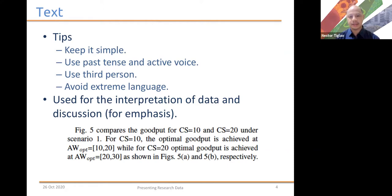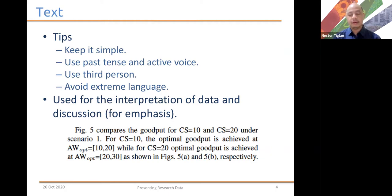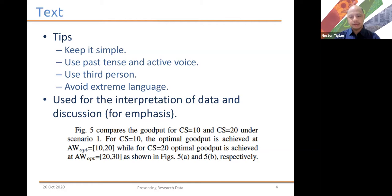In this case, we're discussing some optimal value and we just identified where that optimal value is. Text is a very effective way to do this because if you use, for example, a table or a graph, then you would use more space because you have to substantiate that and then pinpoint where that optimal point is.